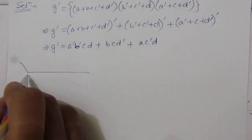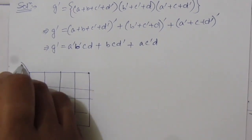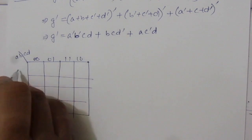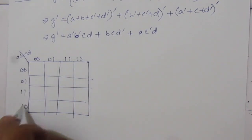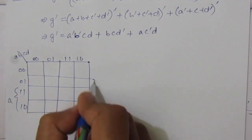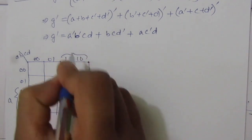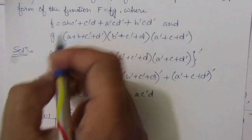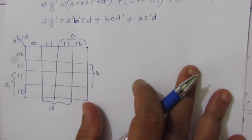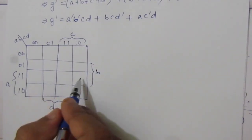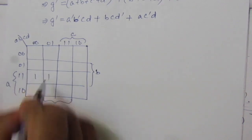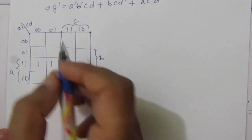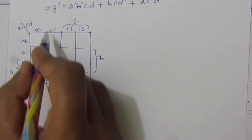For the four-variable map of f, we set up the map with variables ab and cd. The rows represent a and b, and the columns represent c and d. For the first term a·b·c-bar: ab is this row and c-bar means the first and second columns, so we put one values. The second term c-bar·d is this column, so we put one values there.